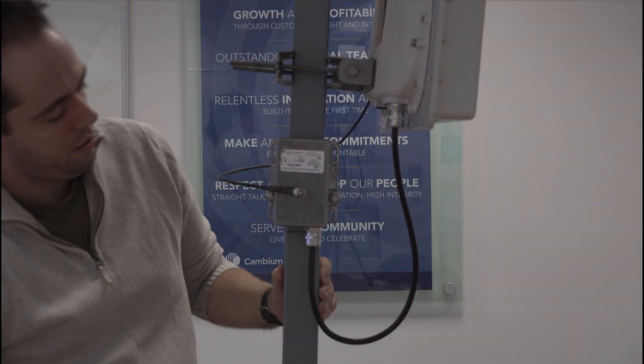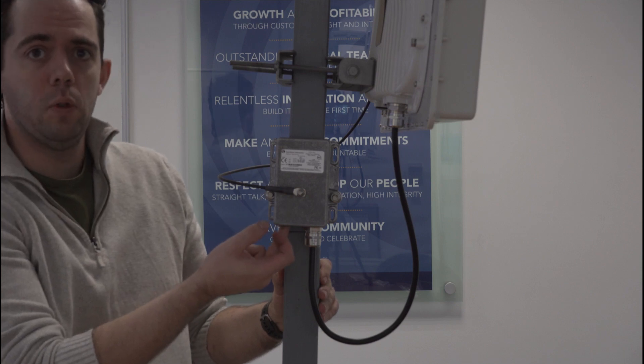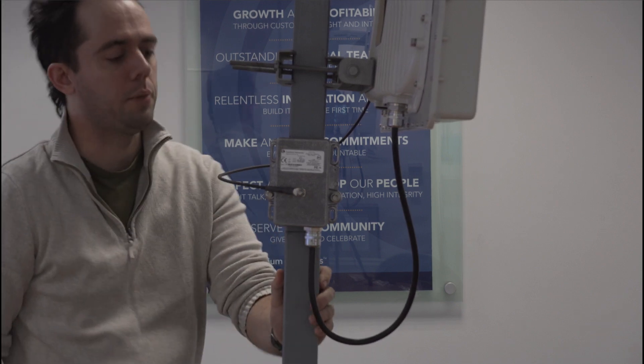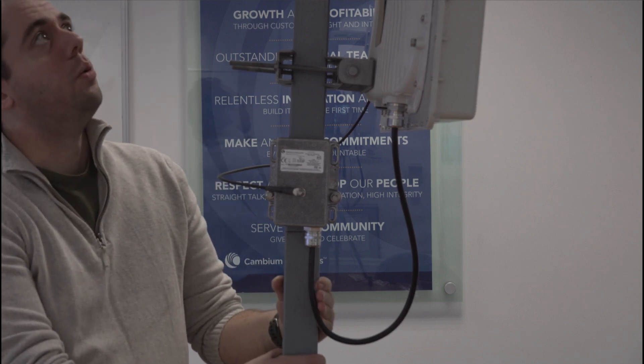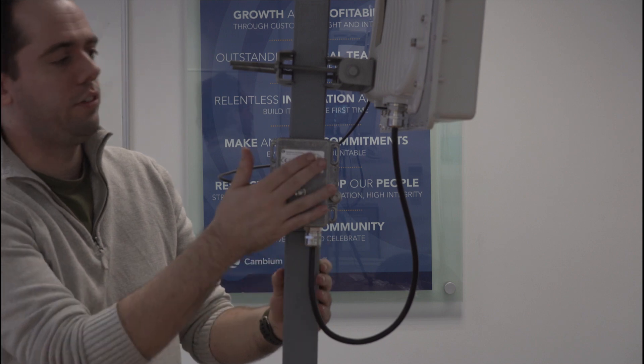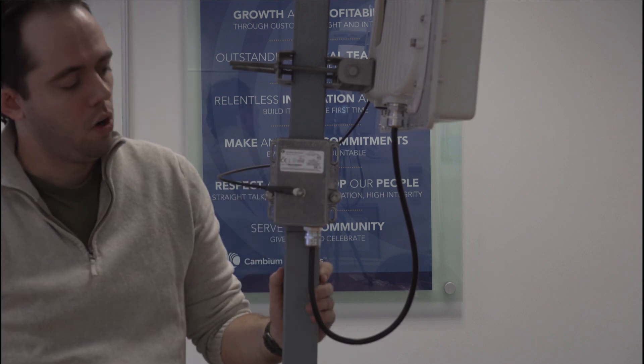And then repeat this with your second drop cable going down to your network cabinet, or wherever it will go next. But that is now connected up to your LPU and weather tight.